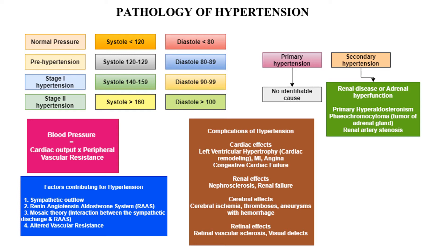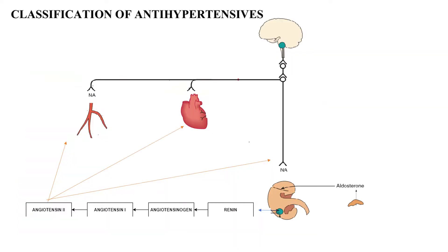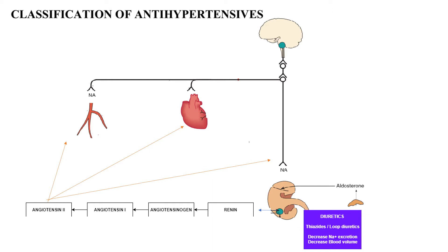Let us see the classification of antihypertensives. They act at four different levels: the kidneys, the heart, the blood vessels, the brain, and at the aldosterone or adrenal glands.